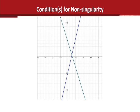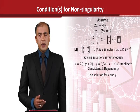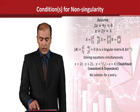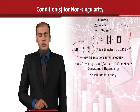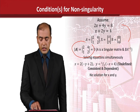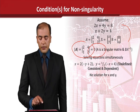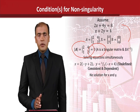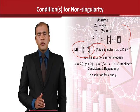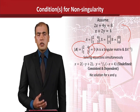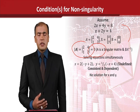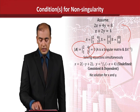Now let us take another example. Again there are two equations. We have written them in matrix form and extracted the coefficient matrix, and we have calculated the determinant. It is equal to zero, and now we know that it should be a singular matrix. But how exactly is it a singular matrix? We shall see.